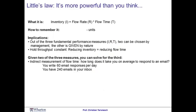If we smoothen these graphs, the slope of the line corresponds to the flow rate — the rate at which customers come in and go out of the restaurant. We see that on average in a process, the inventory, expressed here as customers, equals the flow rate, expressed in customers per minute, times the flow time, expressed in hours. The hours cancel out, and you have customers as the unit on both sides. Again, this is not a formal proof, but the basic intuition behind Little's Law.